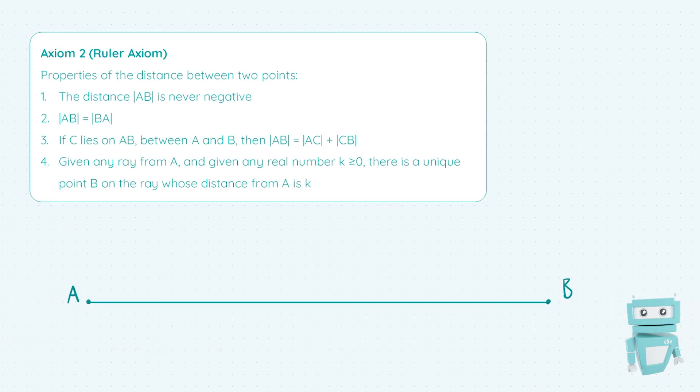Point four states that given any ray from A and given any real number k greater than or equal to zero, there is a unique point B on the ray whose distance from A is k.